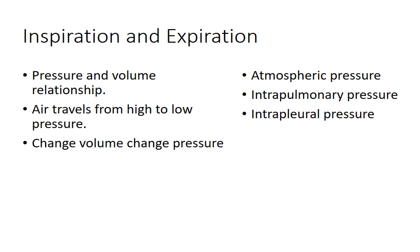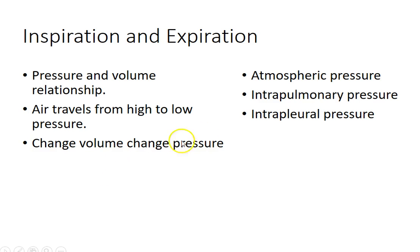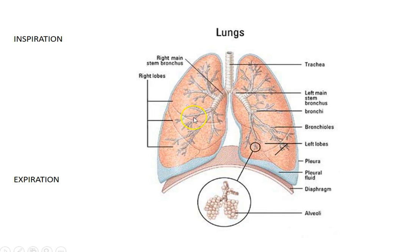There are three different types of pressure you need to know. The first is atmospheric pressure, which is outside the lungs — outside the body, all around us, all the way up through the sky. The second is intrapulmonary pressure, which is the pressure within the lungs.